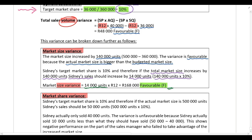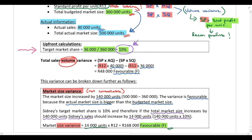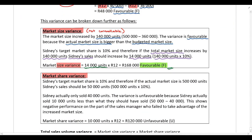It's important to note that the market size variance is not controllable by the company. They have no control over the total market size increasing from 360,000 to 500,000 units — that results from changes in the economy and changes in demand for the product. However, their market share is controllable.